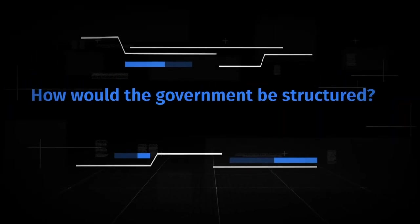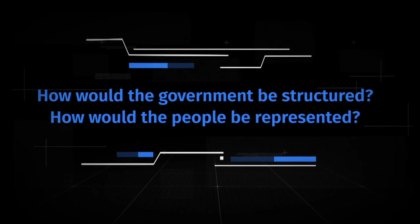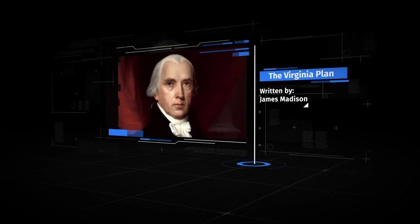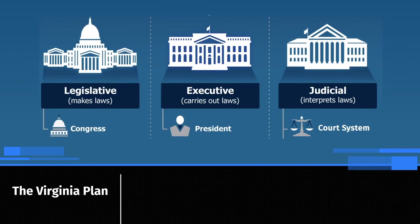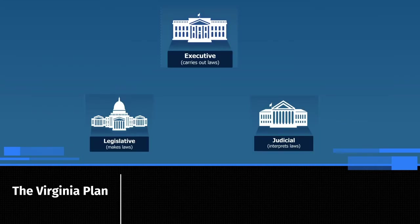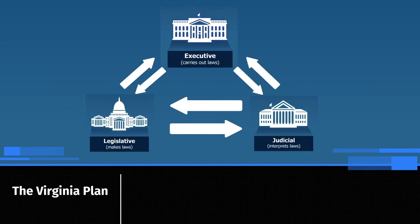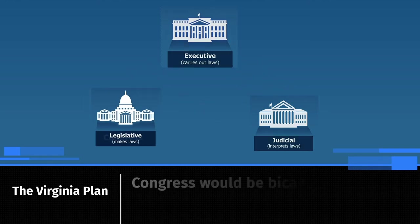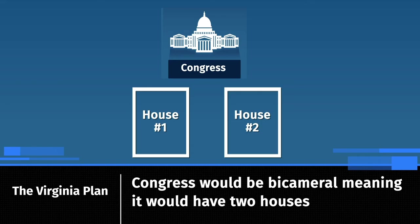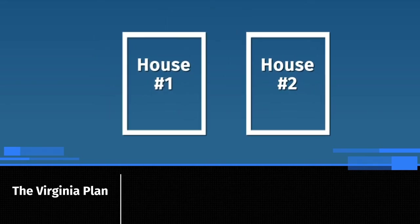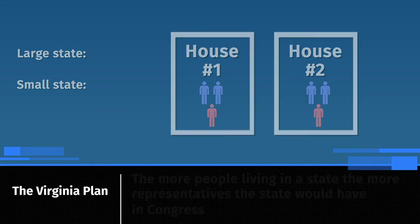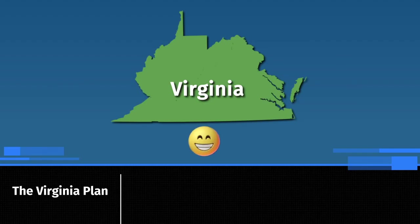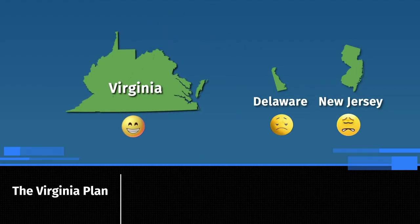One of the first decisions the delegates had to make was how the government would be structured and how the people would be represented. The first proposal was the Virginia Plan, written by James Madison. It created three branches of government — the legislative branch or Congress, the executive branch with the president, and the judicial branch with the court system. Each branch would check the others to prevent any from taking too much power. Congress would be bicameral with proportional representation, meaning the more people in a state, the more representatives. Virginia had the largest population, so their plan favored large states, and small states feared they would have no voice.